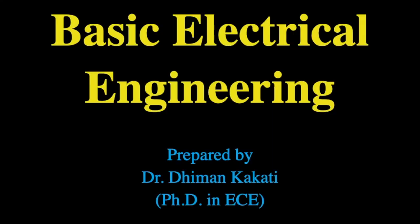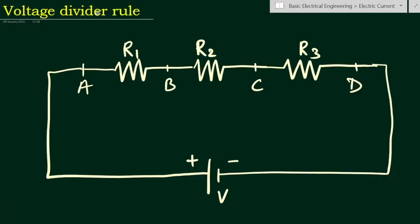Hello everyone, this is Dr. Dhiman. In this video we will learn about the voltage divider rule. We have a series connection of resistances. If we want to find out the voltage drop across any one of the resistances using the voltage divider rule, we have marked some points across these resistances: a, b, c, and d.